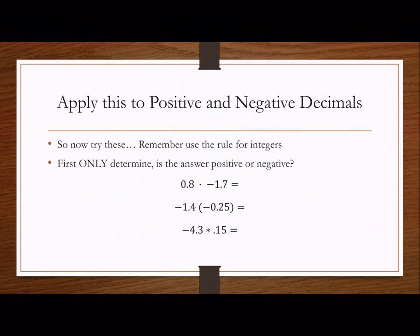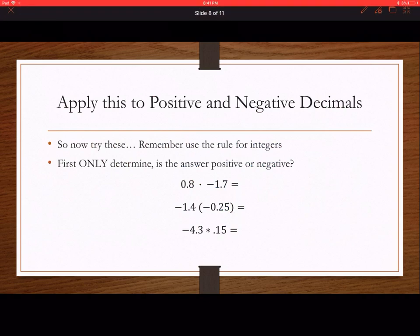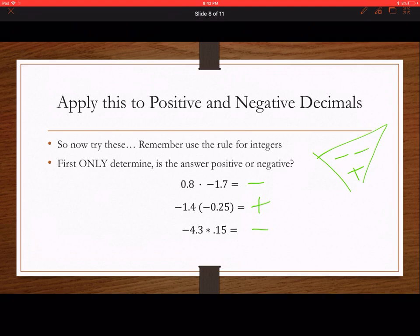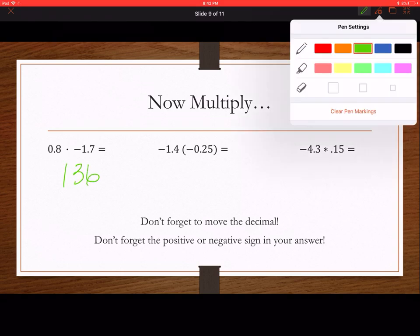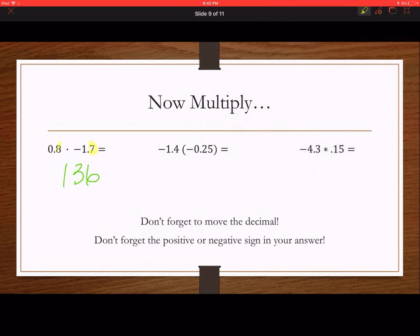Let's do this again. Using the Pizza Man to determine sign first: negative — positive — negative. Then multiplying using the multiplication chart. This looks like 17 times 8. On the multiplication chart, 17 times 8 is 136. There are 1, 2 decimal places in the problem, so move 1, 2 decimal places in the answer. Because of the Pizza Man, the answer is negative 1.36.